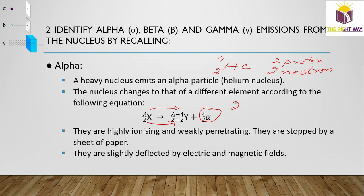Alpha particles have a charge of plus two. Due to this charge, they have a high ionizing power. However, because of their large mass, they are weakly penetrating and are stopped by a sheet of paper. Alpha particles are slightly deflected by electric and magnetic fields because they are positively charged.